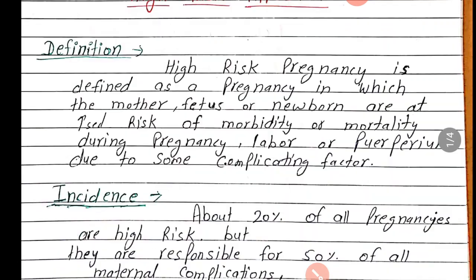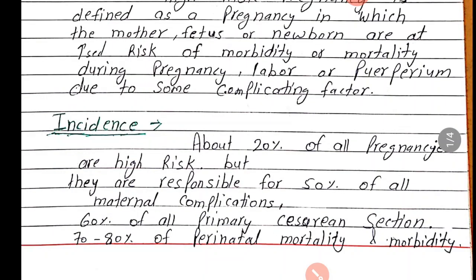Incidence of high risk pregnancy: About 20% of all pregnancies are high risk, matlab jo total pregnancy hain unme se 20% pregnancy high risk ki category mein aati hain, but they are responsible for 50% of all maternal complications.